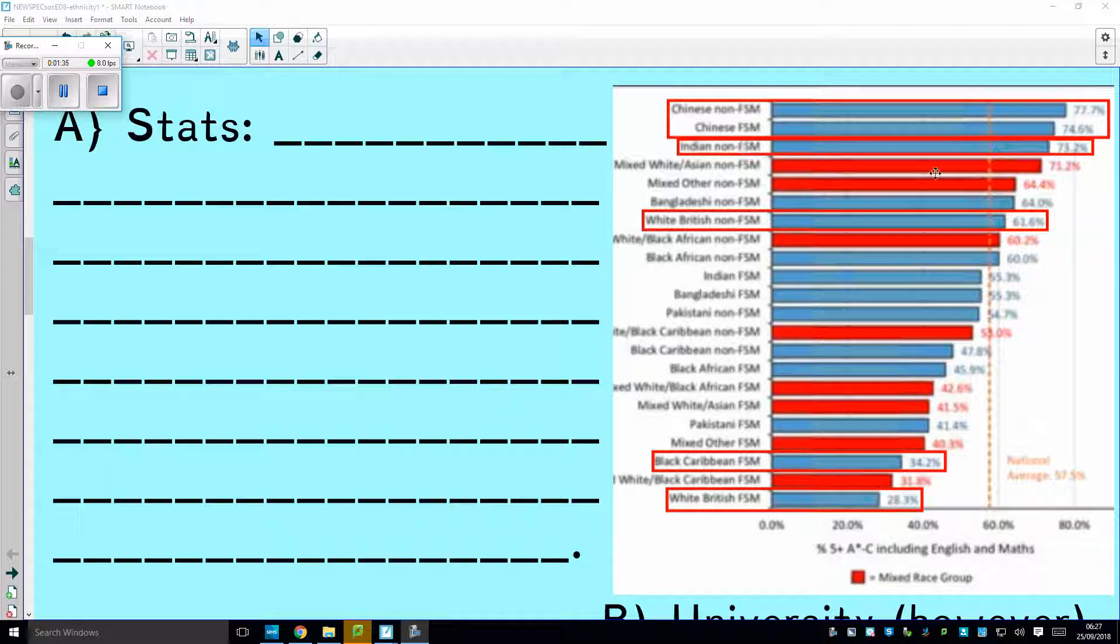Indians, non-free school meals, 73.2%. That's the largest group in the whole country, British non-free school meals. Towards the bottom, Black Caribbean with a free school meal, 34%. White British free school meal, 28%. So there's very large ethnic differences between groups of kids and what GCSE grades they get.